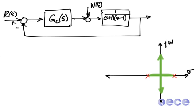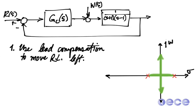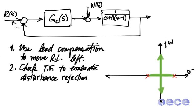So here, we'd like to be able to look at the root locus and see how we can make the root locus move to the left. We can use lead compensation to move the root locus left, and after we finish, we're going to check the transfer function to see whether or not we've actually rejected those disturbances such that the system will remain stable.